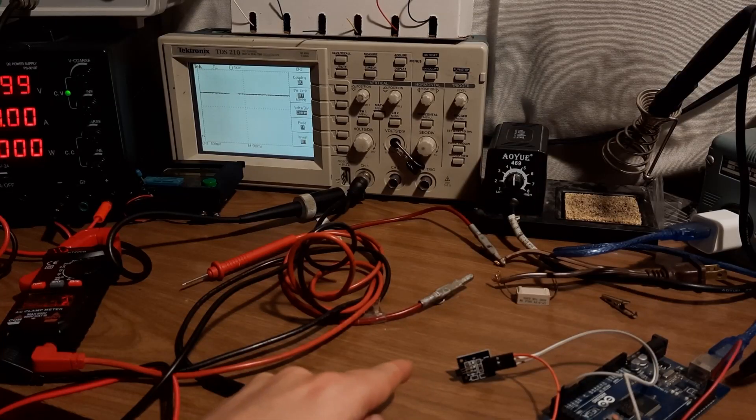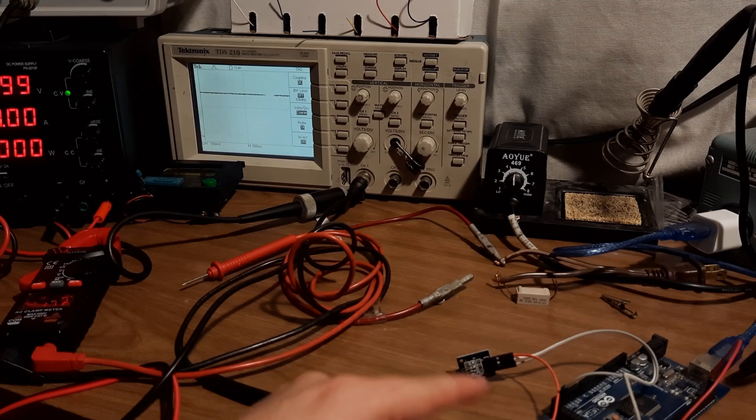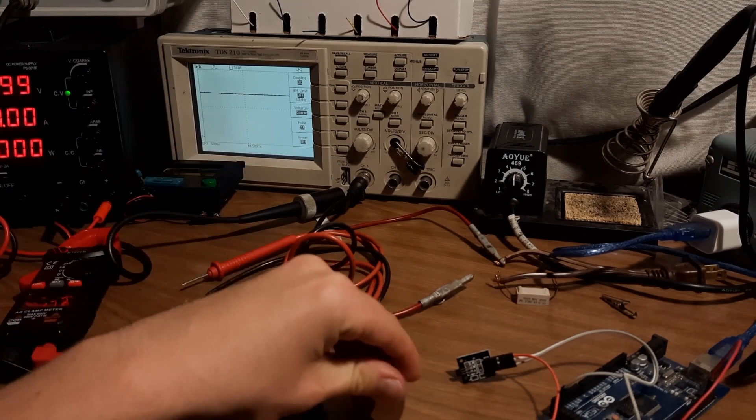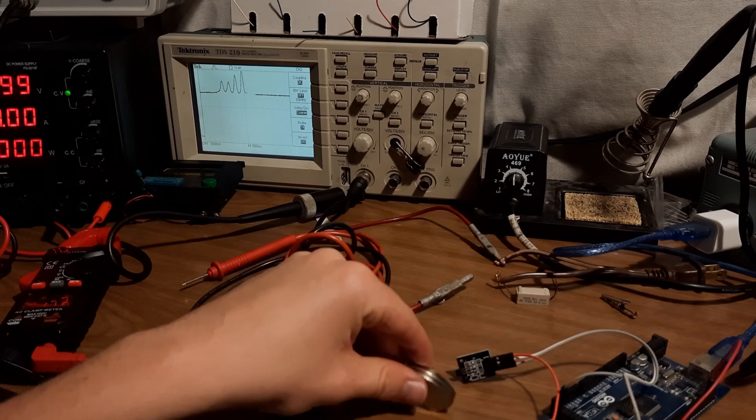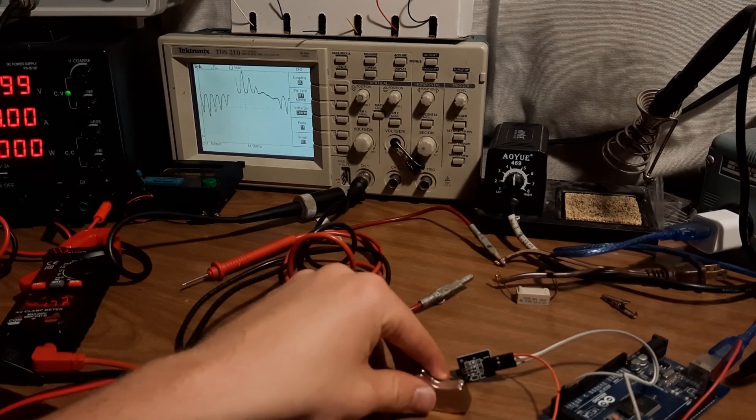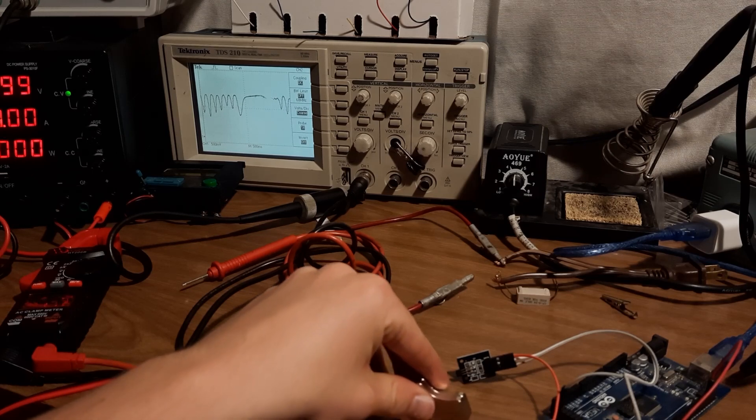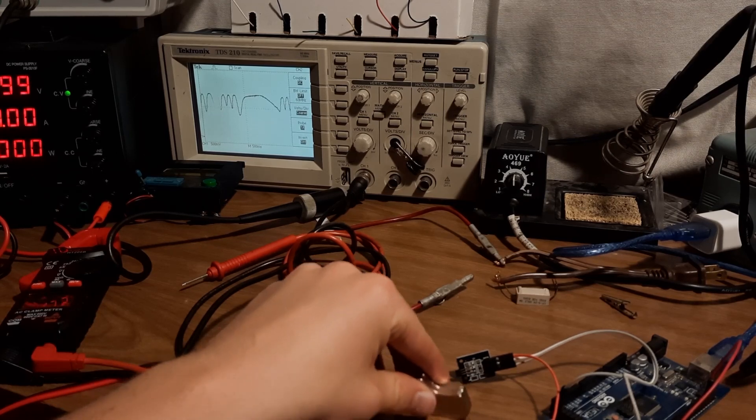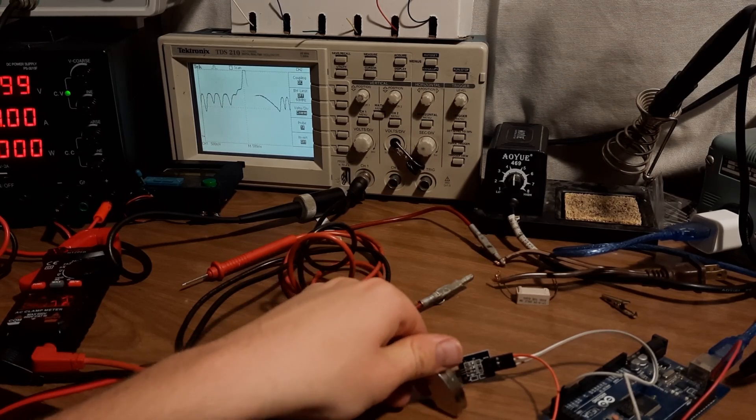So I'll test out this Hall Effect sensor. I hooked it up to 5 volts, ground, and then the output to my oscilloscope. If I move a hard drive magnet near it, you can see that it changes the voltage that is shown on the oscilloscope. It's very sensitive. This is kind of fun to play with.